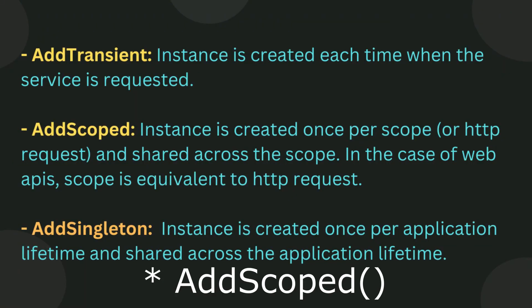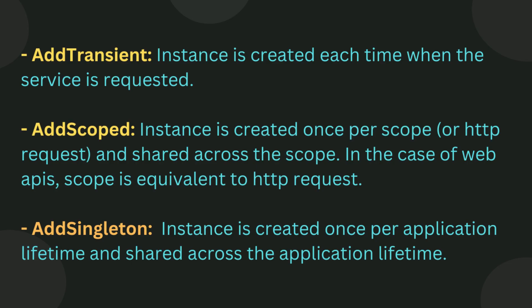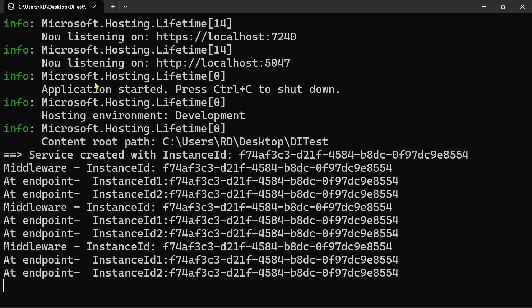So to summarize: AddTransient creates a new instance every time it is requested. AddScoped creates an instance once per scope — and in the context of web APIs, the scope is equivalent to the HTTP request, so the instance is created once per HTTP request. AddSingleton creates an instance of the service once per application lifetime, and this instance is shared for the whole application lifetime.